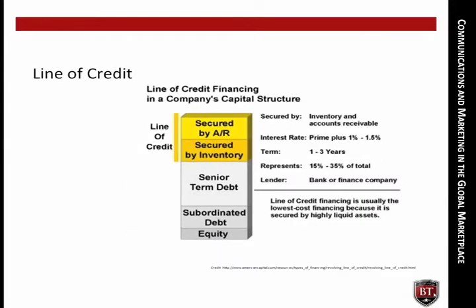Line of Credit. An arrangement between a financial institution, usually a bank, and a business that establishes a maximum loan balance that the bank will permit the borrower to maintain. The borrower can draw down on the line of credit any time as long as it does not exceed the maximum set in the agreement. The advantage of a line of credit over a regular loan is that interest is not usually charged on the part of the line of credit that is unused, and the borrower can draw on the line of credit at any time. Depending on the agreement with a financial institution, the line of credit may be classified as a demand loan, which means that any outstanding balance will have to be paid immediately at the financial institution's request.